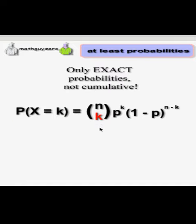But now our formula, binomial probability formula, only works with exact probabilities. It doesn't add them all up. That's what we call cumulative. So how are we going to solve this problem?